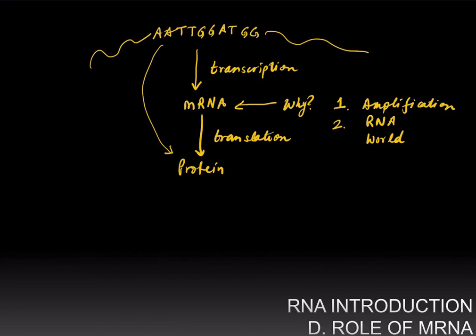Perhaps the reason we have an intermediate messenger RNA is that originally, mRNA performed both functions: information storage and providing enzymatic activity — doing all the things that proteins do. Later on, more specialized molecules evolved — DNA for information storage and proteins for catalytic activity — but leaving RNA still as an intermediate between DNA and protein.